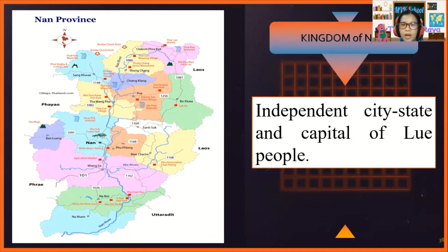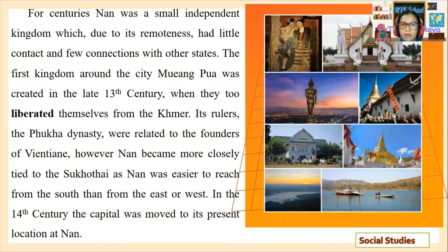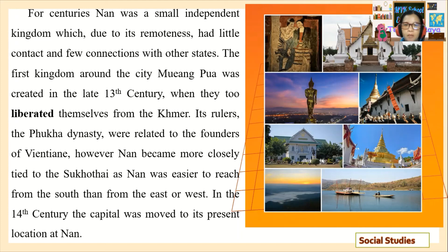Next is the Kingdom of Nan — an independent city-state and capital of the Lu people. For four centuries, Nan was a small independent kingdom which, due to its remoteness, had little contact and few connections with other states. The first kingdom around the city of Muang Fa was created in the late 13th century when they too liberated themselves from the Khmer. Its rulers, the Puka dynasty, were related to the founders of Chiang Saen. However, none became more closely tied to Sukhothai, as Nan was easier to reach from the south than from the east or west. In the 14th century, the capital was moved to its present location at Nan.